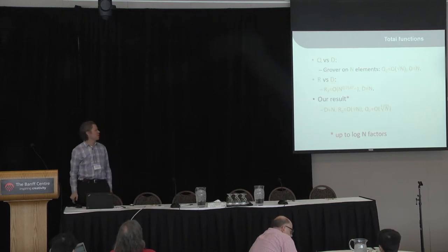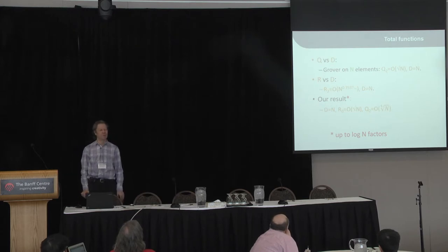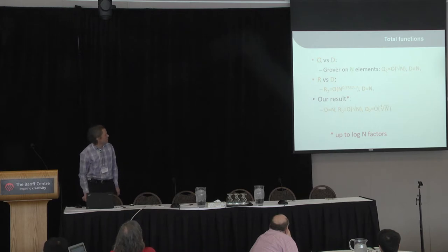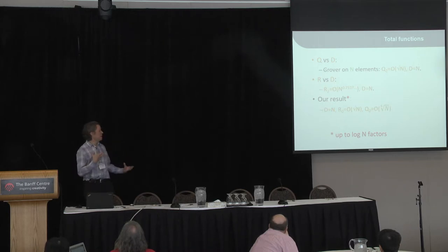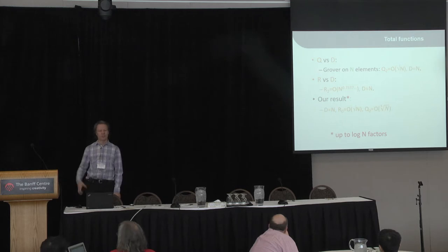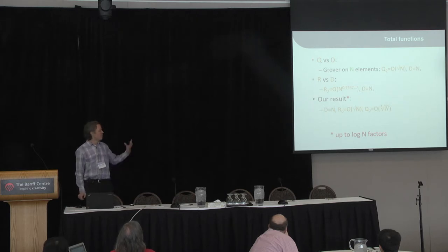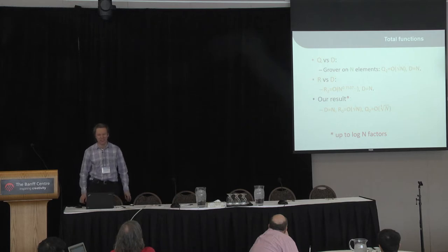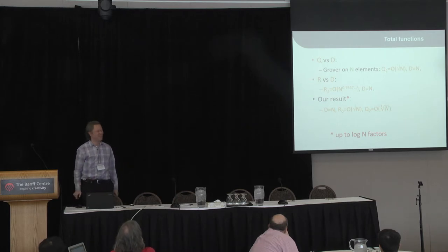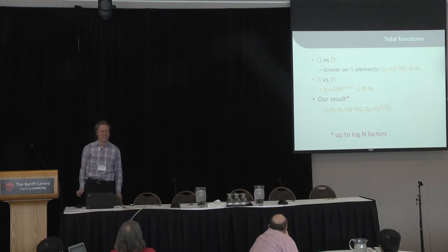These were the best results up to now. We improved both of them. We give an example where deterministic complexity is N, randomized complexity is order square root of that, and quantum is order fourth root of deterministic. When I say order square root of N, I mean order square root of N times some log factors — all big-O here really means big-O-tilde, but the same disclaimer applies to all bounds shown.